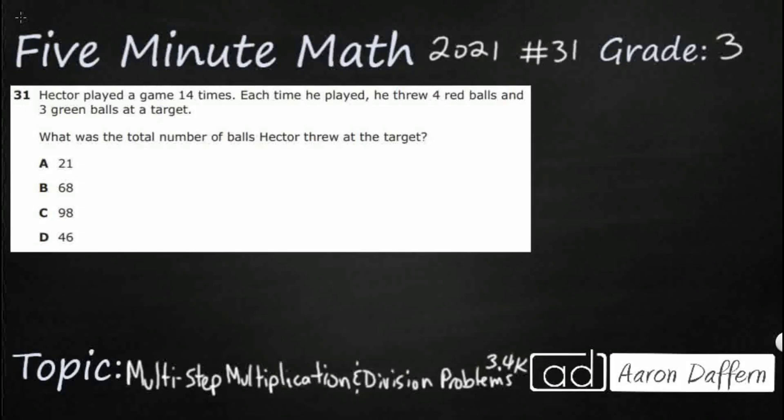Hello and welcome to 5-Minute Math. Today we are looking at the third grade concept of multi-step multiplication and division problems. This is standard 3.4K in the great state of Texas, and we are using item number 31 off the 2021 released STAR test.